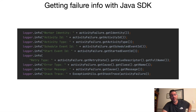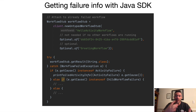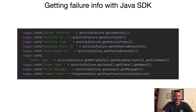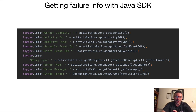Now let's look at getting the failure info. We can catch a WorkflowFailedException, and because our activity failed, we get the cause of the WorkflowFailedException and convert it to an ActivityFailure. We then call the printFailedActivityInfo method to get all the info out. From it we can get the worker identity, activity ID, activity type, scheduled and start event IDs, retry state, error type, error message, and for the Java SDK, we can also get the stack trace. Using just the Temporal Java SDK APIs, we can get all the information we previously saw in the web UI.